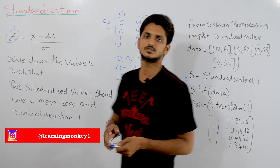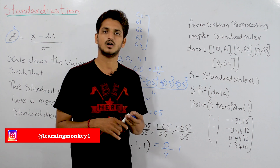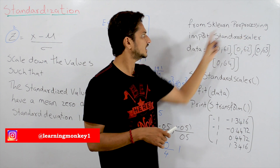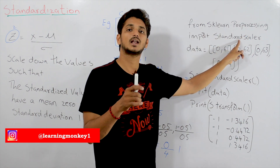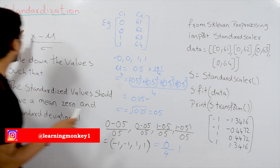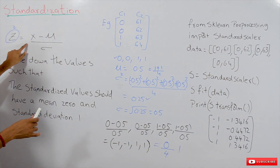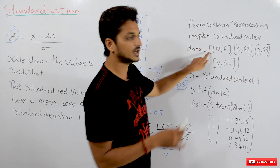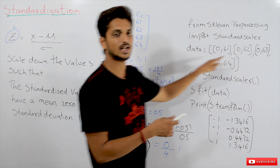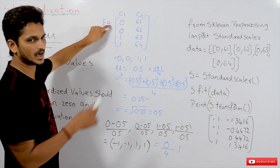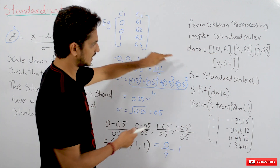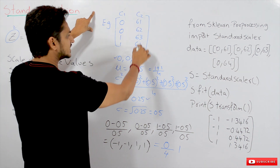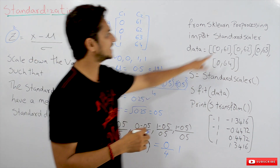How to code for this? Coding is very simple. From sklearn.preprocessing import StandardScaler. StandardScaler is a class used to do the standardization. We take data as a list within a list, which is treated as a two-dimensional array. Take the first column and standardize, take the second column and standardize — that is what StandardScaler will do.